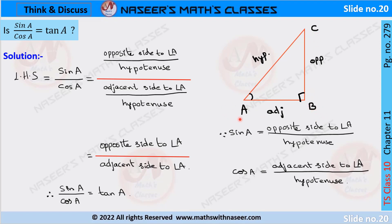BC is the opposite side to angle A, and AB is the adjacent side to angle A, and AC is the longest side, so it is the hypotenuse. We already know that sine A is defined as the ratio of the opposite side to angle A over the hypotenuse, and cos A is defined as the ratio of the adjacent side to the hypotenuse.